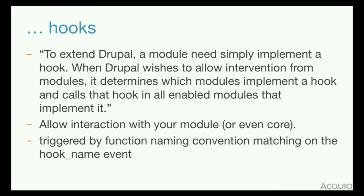To extend your functionality, your custom module simply needs to implement a hook. When core wishes to allow intervention, or when you as a module developer want other module developers to intervene in your code or extend your functionality, you declare a hook. Other module developers can then hook into your module, or we can hook into core by implementing those hooks. Hooks are discovered in the module file, triggered by a naming convention mechanism — you declare a name, prepend it with your module name, and Drupal calls any function implementing that name.